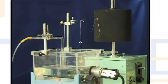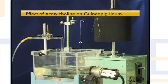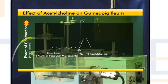You will observe upward movement of the tip of the frontal writing lever on the smoked paper. Stop the drum and rapidly wash the preparation with fresh Tyrode's solution. Allow relaxation of the contracted ileum for about 4 to 4.5 minutes.